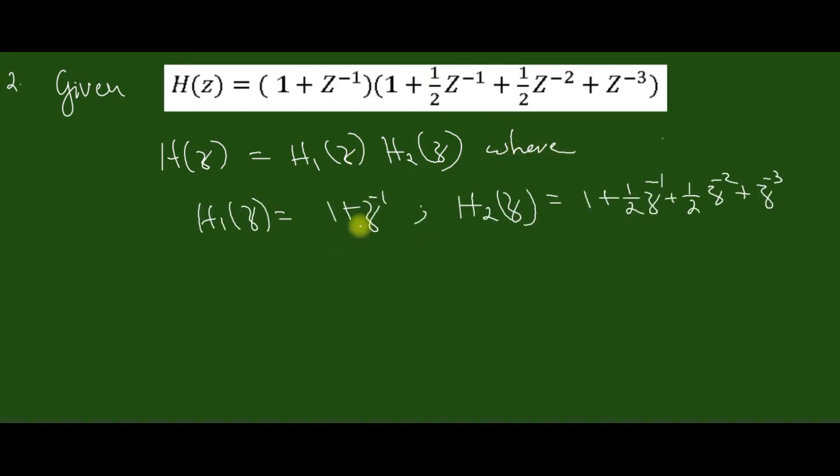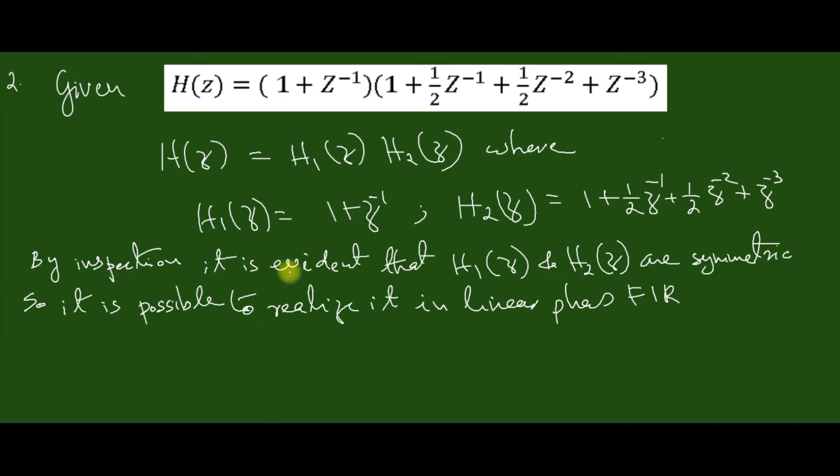Where H1(z) equals 1 + z^-1, H2(z) equals this one. By inspection it is evident that H1(z) and H2(z) are symmetric, so it is possible to realize it in a linear phase FIR of cascade structure.